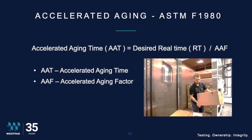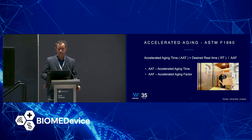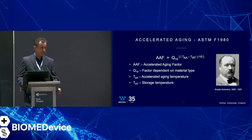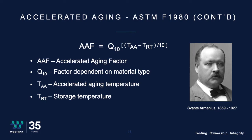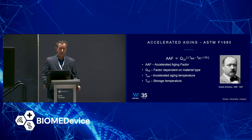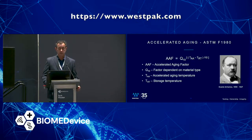We call that AAT — accelerated aging time — the duration that will be in the chamber, along with the accelerated aging factor. A brilliant man, Arrhenius, initially a physicist but became more known for his studies in chemistry, came up with a formula where a 10°C increase in temperature will get you a two times acceleration in function. This means you can create an accelerated aging factor to reduce the time needed to age something. The accelerated aging factor equals Q10, which is dependent on material type, though there is a very conservative factor that the standard uses.